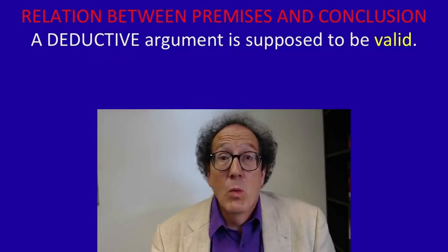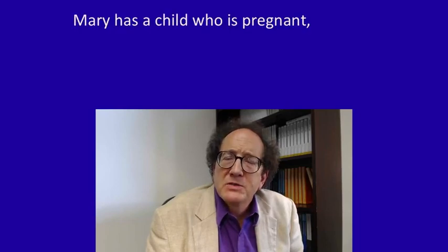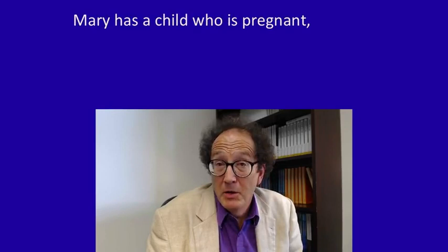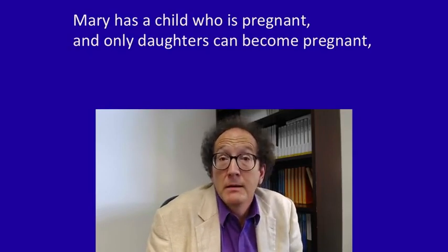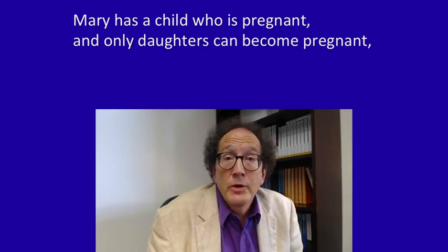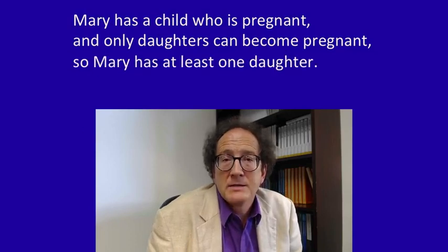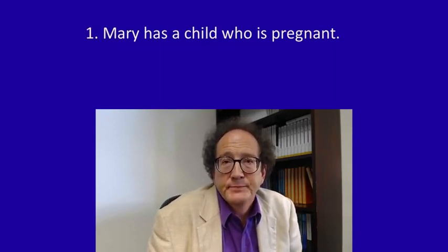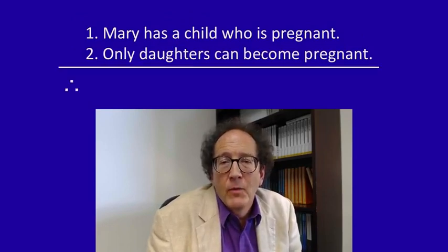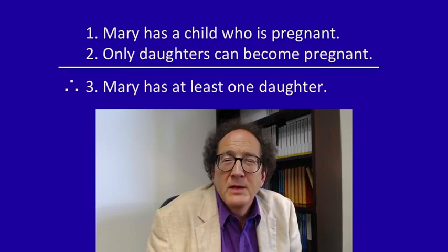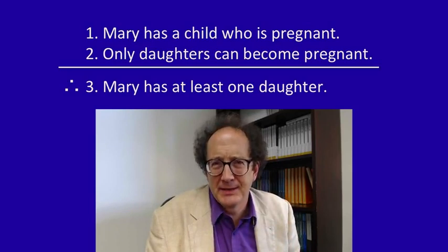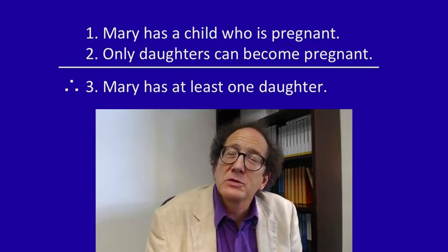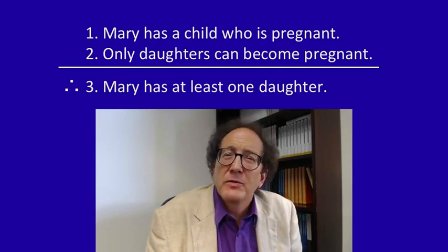What's validity? Suppose you know Mary but don't know her children. However, you know she has one child who is pregnant, and you also know that only daughters can become pregnant. So you have all you need to draw the conclusion: Mary has at least one daughter. Here's the argument: Mary has a child who is pregnant. Only daughters can become pregnant. Therefore, Mary has at least one daughter. If you think about it, there's just no possibility that both premises are true and the conclusion is false. That is the feature we're going to call validity.